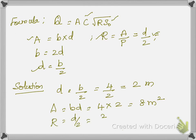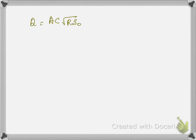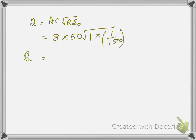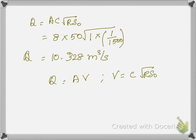Next, r equals d by 2, which is 2 by 2, equal to 1. Now substituting into Q equals A times C times root of r times S₀: A is 8, C is 50, r is 1, and S₀ is 1 by 1500. The discharge value comes out to 10.328 cubic meters per second. The unit comes from area in square meters times velocity in meters per second, giving cubic meters per second.